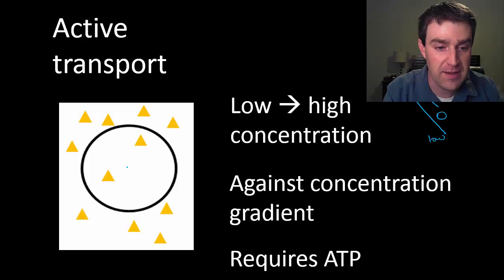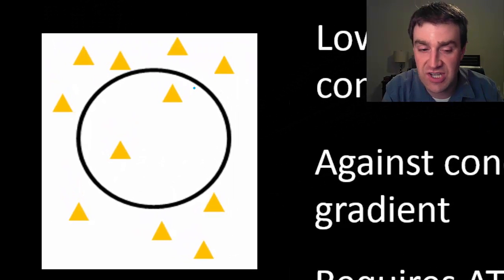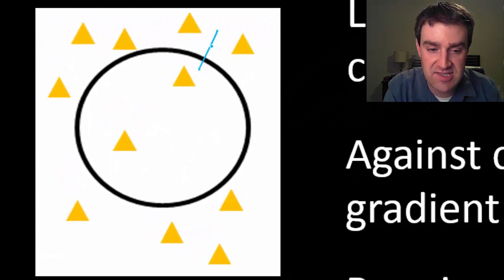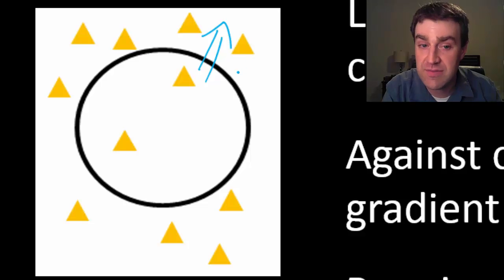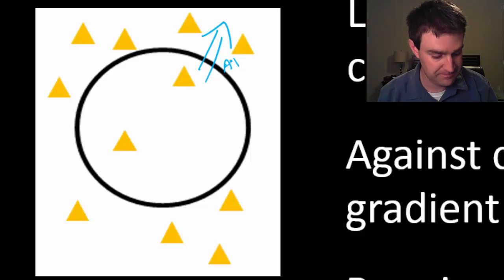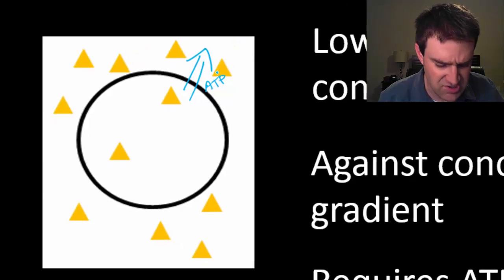An example here might be these little triangles. If we were really interested in concentrating them outside the cell, then in order to push them outside, we would need to spend some ATP. Why might cells be interested in doing this?